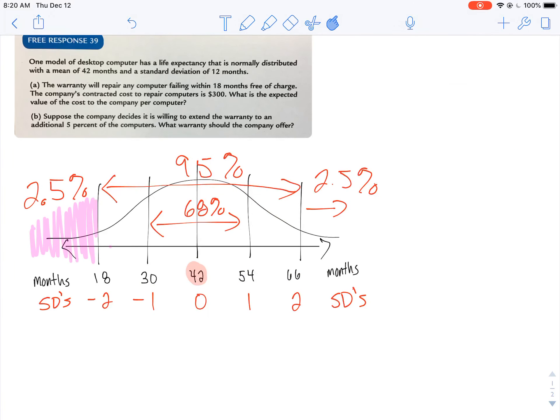Now, based on the normal model I drew here, I know that that means 2.5% of my computers are probably going to need repairs. So I know that I'm going to have to pay $300 for 2.5% of those computers.